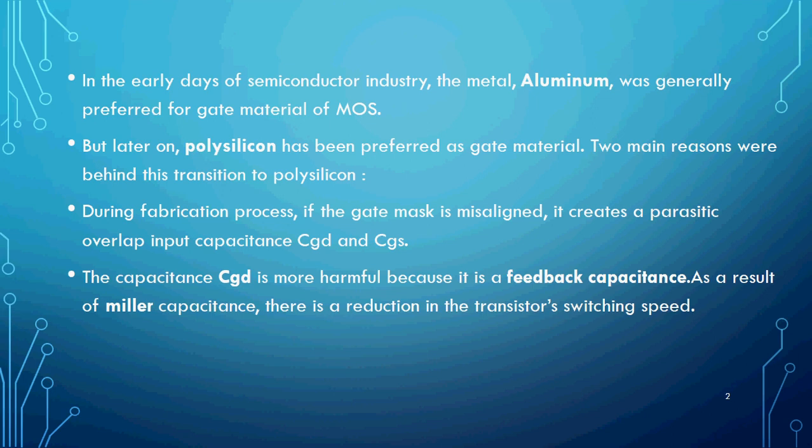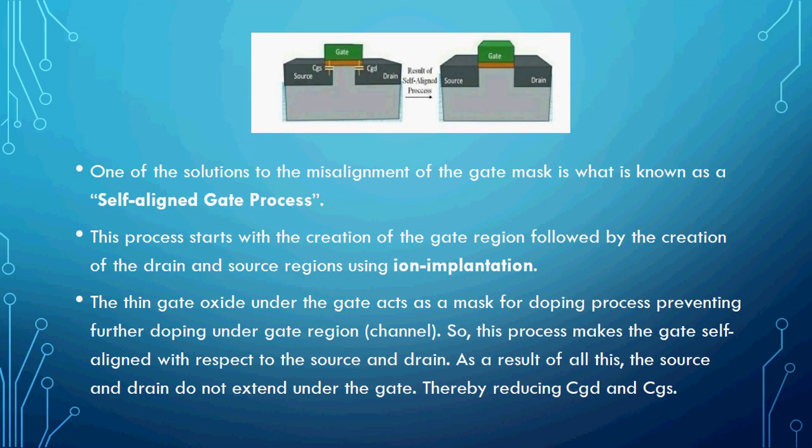These parasitic capacitances are very harmful to the device because both CGD and CGS directly affect the transition switching speed — meaning the on and off time depends on CGD and CGS. So we need to reduce both CGD and CGS, and that is the reason they moved to polysilicon.